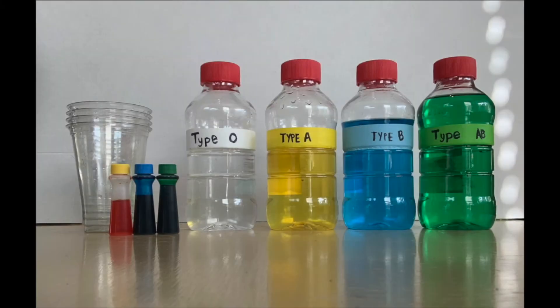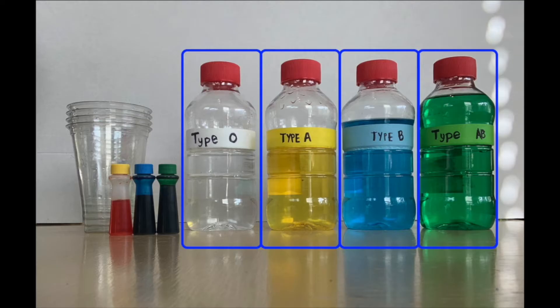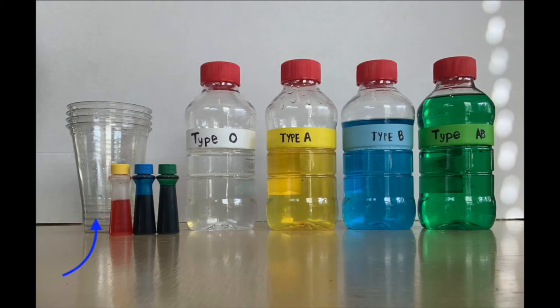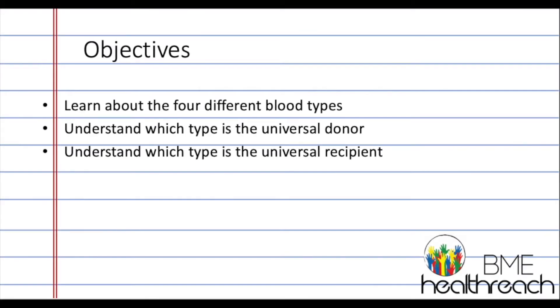Today we're doing the blood type activity. To get started we're going to need a few items, which include four plastic water bottles — these can be labeled or you can draw directly on them with a Sharpie. You're also going to need plastic cups for mixing, and yellow, blue, and green food dye. We'll use these colors to represent the different blood types, but remember that in the body they are all actually red.